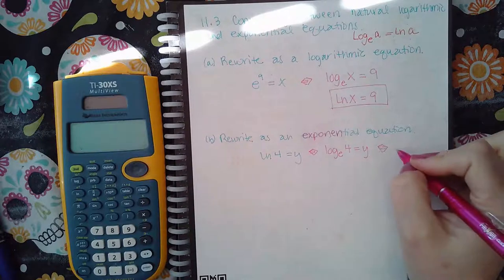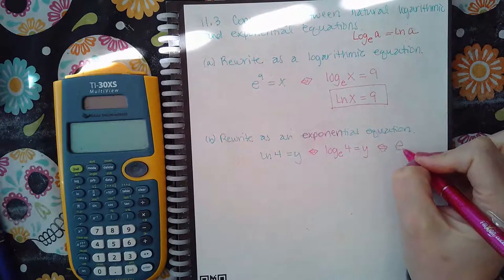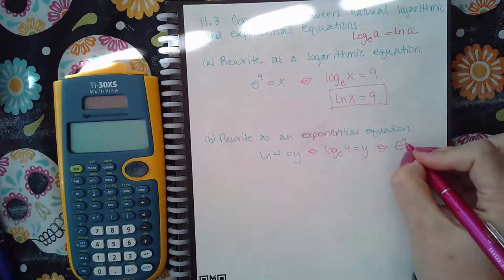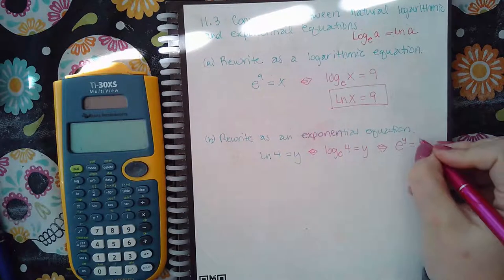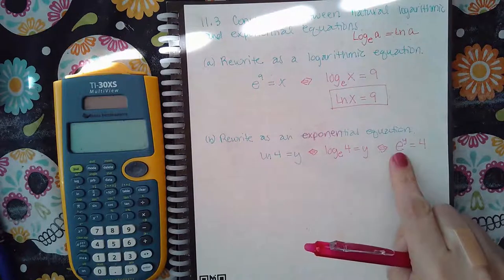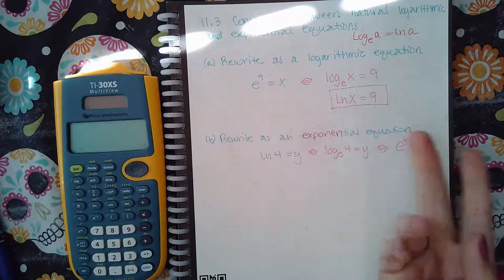So the base should be the same, which is an e. And then the logarithmic equals an exponent, so the y becomes the exponent. And then the argument has no choice but to come to the other side. So again, base stays the base, and the four and the y switch sides.